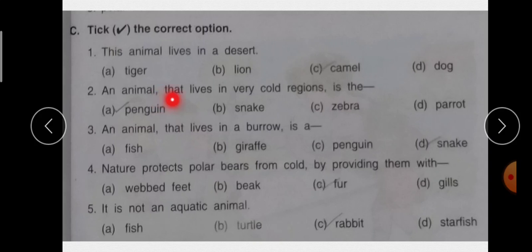Second है an animal that lives in very cold regions is the penguin, snake, zebra, parrot. कि इन में से कौन सा animal जो है cold region में रहता है? तो answer है बेटा A that is penguin.